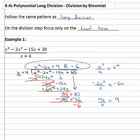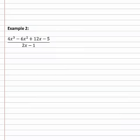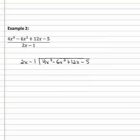Let's try another example, going through this process step by step: dividing the front terms, multiplying, changing the signs, bringing down the next term — over and over, the same process. This time, two x minus one is going to be divided into four x cubed minus six x squared plus twelve x minus five.